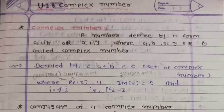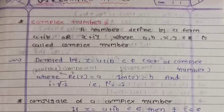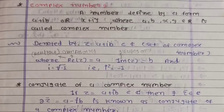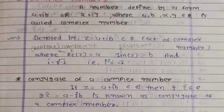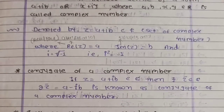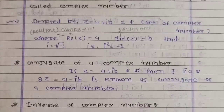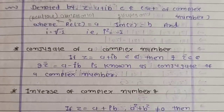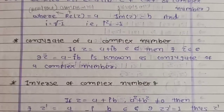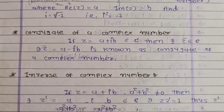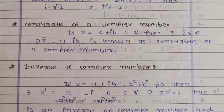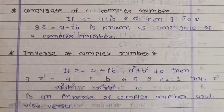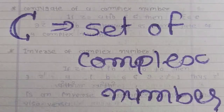Definition of complex number: a number defined by a form a plus ib, or x plus iy, where a, b and x, y belong to R (real numbers), is called a complex number. We denote a complex number as z is equal to a plus ib. The set of complex numbers is denoted by C.